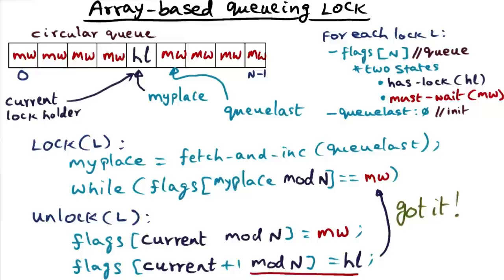Next, we'll look at another algorithm, a lock algorithm that's also based on queuing, but it doesn't have the space complexity of Anderson's queuing lock.